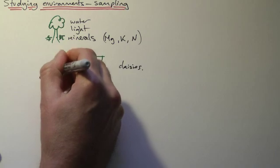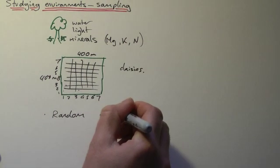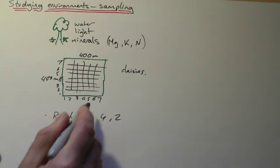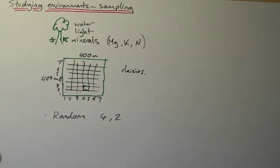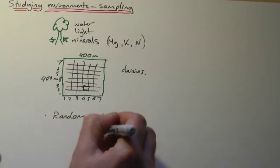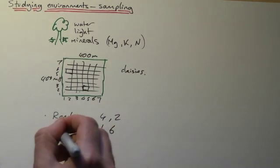And then use random numbers and say, OK, right, first pair of numbers was 4 and 2. So 4 and 2, we're going to sample just this area first of all. And then it's 1 and 6, OK, we're going to sample this area. What this does is it removes bias.